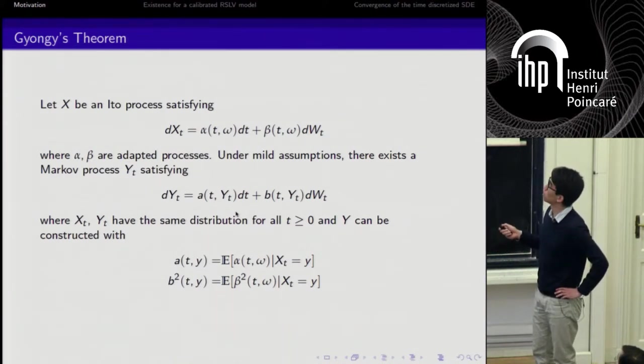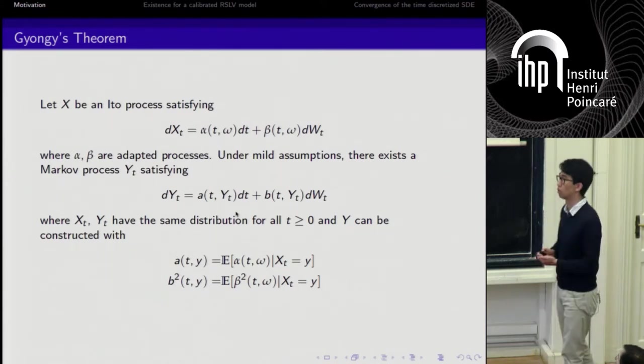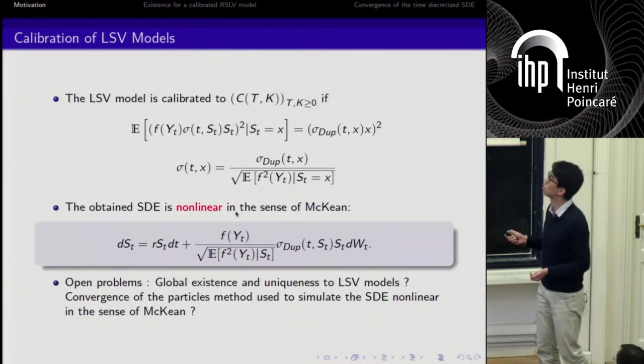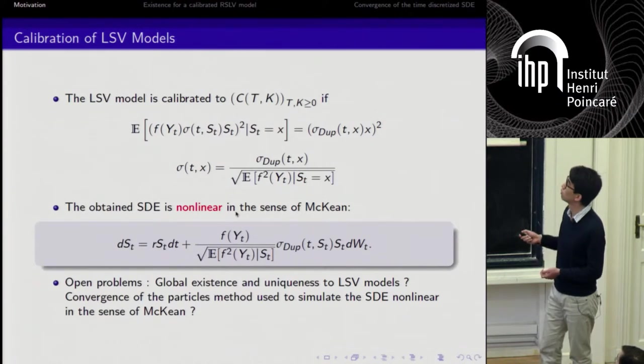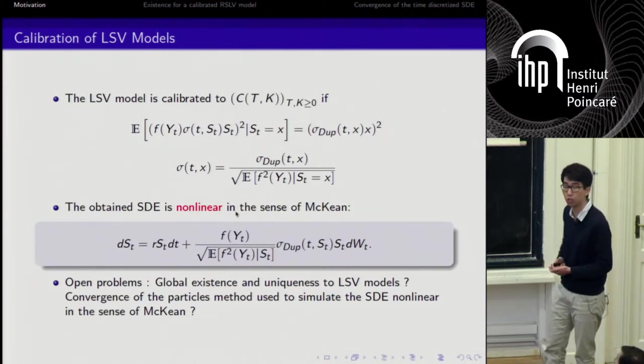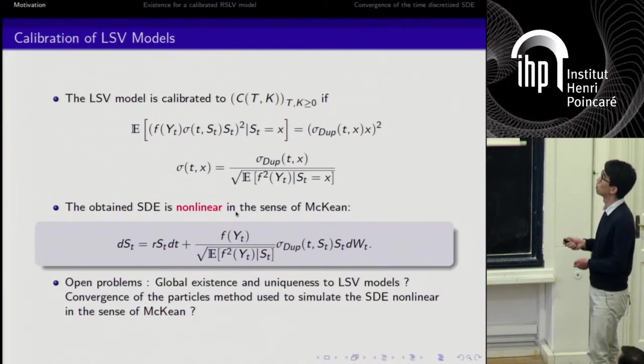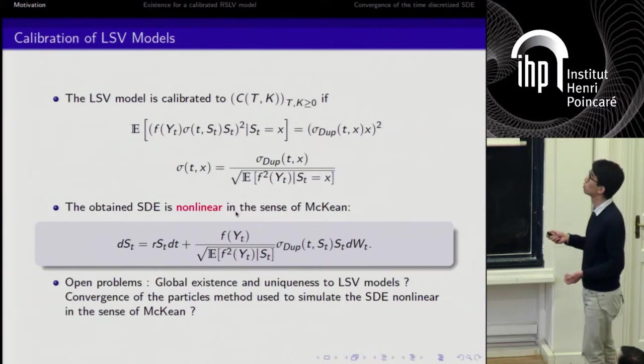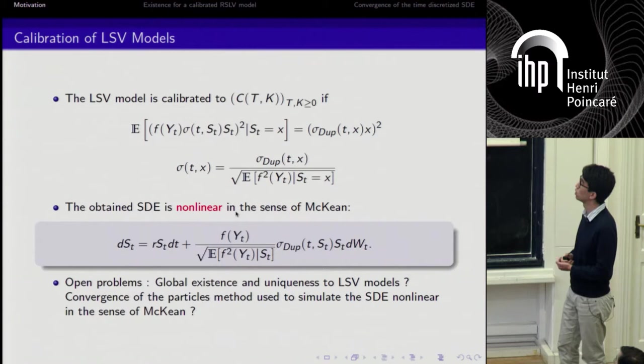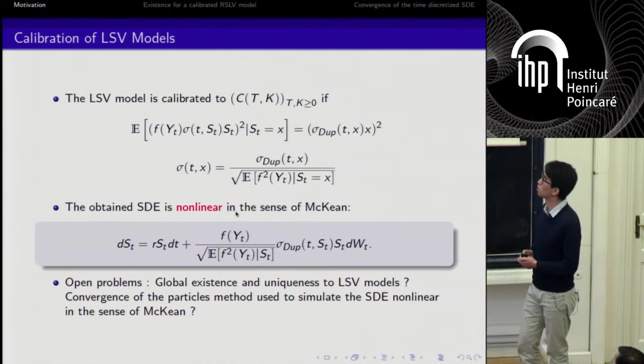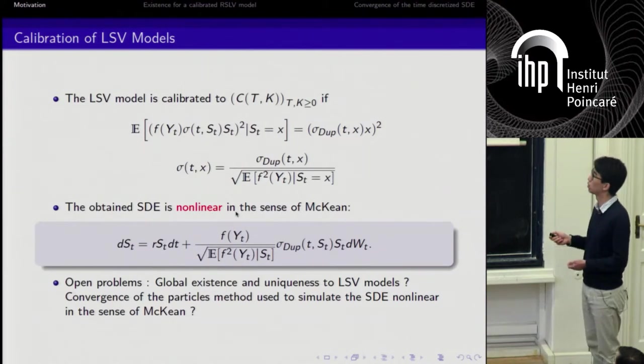Now what we do is that we replace the dynamics of the local and stochastic volatility model here, and we replace Y by the Dupire equation. We identify those two terms. What do we obtain? We obtain that actually the LSV model is calibrated to all the call prices if we make this choice: sigma(T,X) equals the ratio of the Dupire function under the square root of the conditional expectation of the stochastic volatility with respect to the position of the underlying asset. What we obtain here is an SDE that is non-linear in the sense of McKean due to the presence of the conditional expectation here in the denominator, which is quite a nasty term.